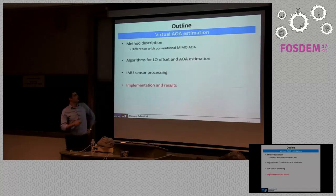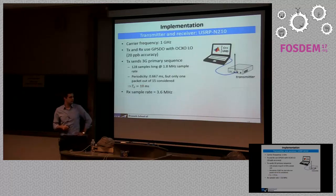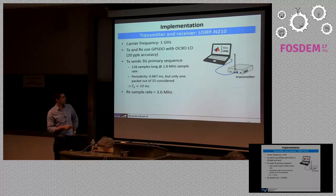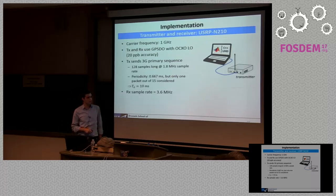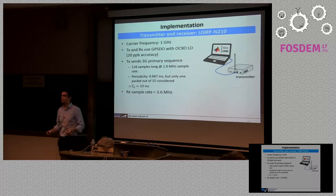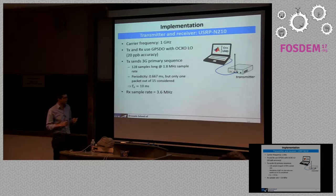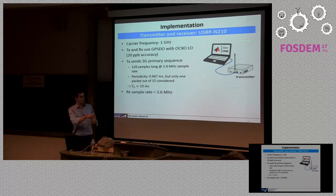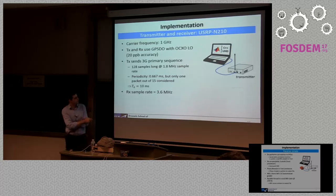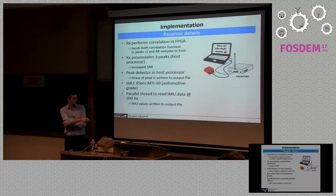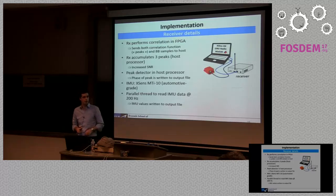Moving to implementation: we put this on the USRP software-defined radio. The transmitter sends the 3G primary synchronization sequence — a sequence running at 1.8 MHz that is very periodic, repeating every 667 microseconds. The transmitter uses GNU Radio and USRP, simply repeating the same packet over and over. The receiver oversamples by a factor of two, and part of the processing is done in the USRP FPGA — specifically, correlation is done in the FPGA to offload some heavy processing.